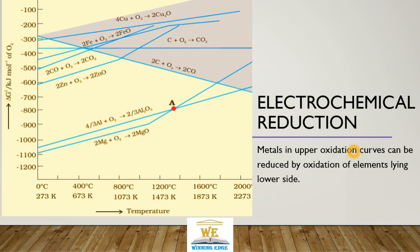Metals in the upper oxidation curve can be reduced by the oxidation elements lying on the lower side. So according to the Ellingham diagram, at any point, any element lying above it can be reduced by the lower lying element. Like here, carbon - all these above elements can be reduced by carbon.